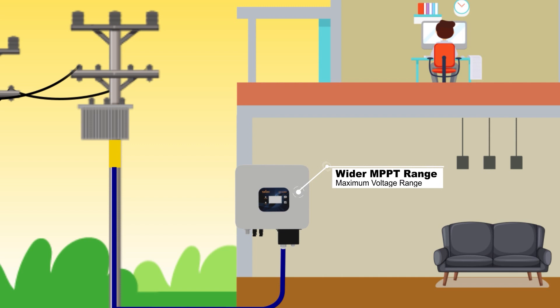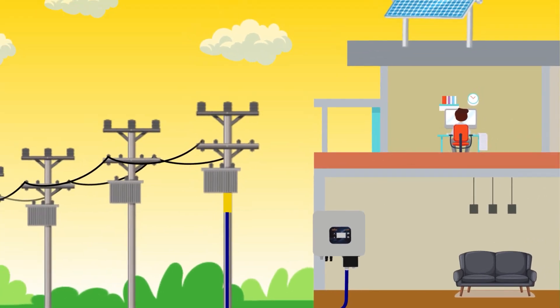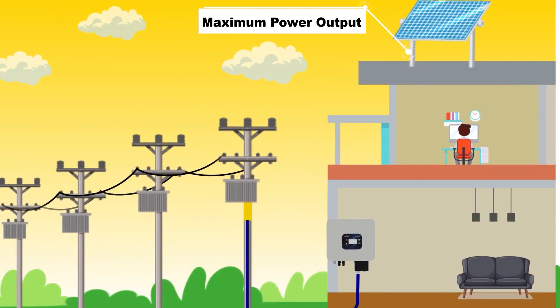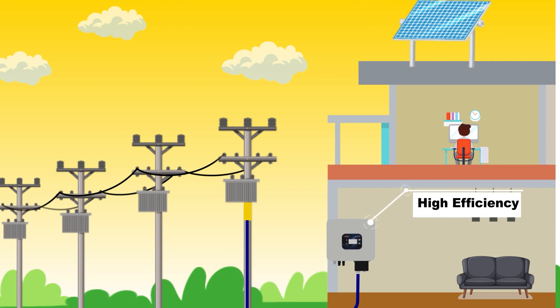Features like wider MPPT range, that is maximum power point tracking, continuously adjust the DC voltage and current to maximize power output of solar panel. The wider MPPT range gives more efficient output.